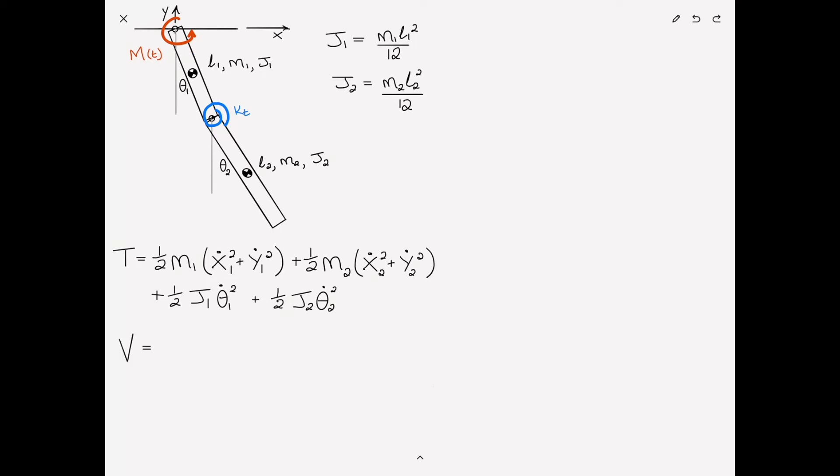Moving on to the potential energy V. V is equal to mgh for each of the masses, so m1 g y1, where y1 is the location, the height of the center of gravity. I remind you that in the case of the rod, the center of gravity is at the midway point at l over 2. Similarly we add m2 g y2, and then to account for the spring, one half k sub t times the displacement theta 2 minus theta 1 squared.